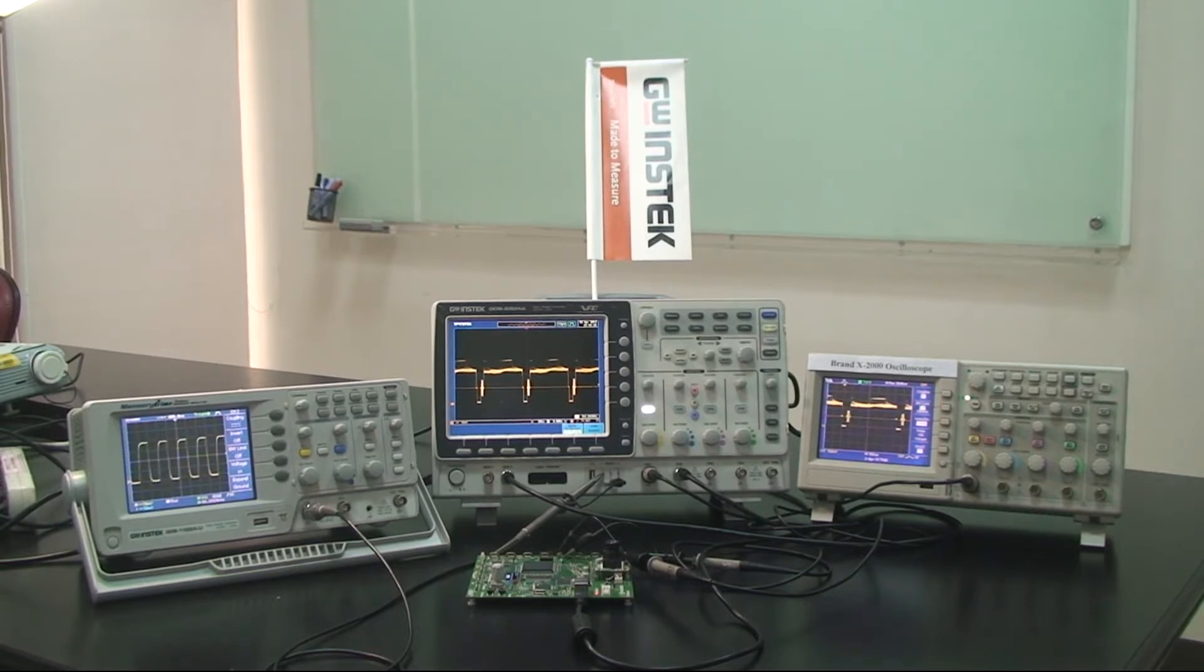In the past, engineers tended to use analog oscilloscope, which has a faster waveform update rate than that of digital oscilloscope. The faster the waveform update rate is, the better the engineers can observe smooth signals when observing fast-changing signals.